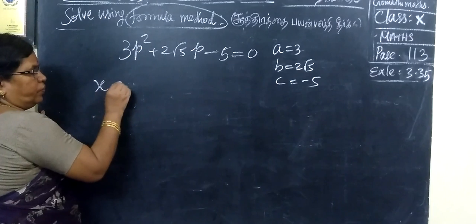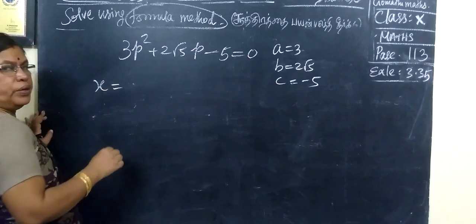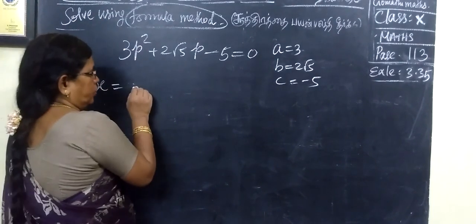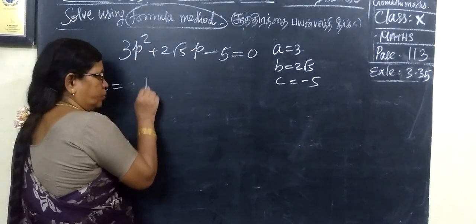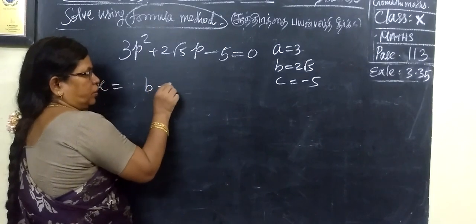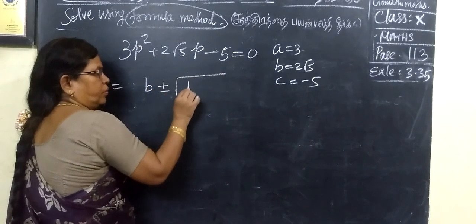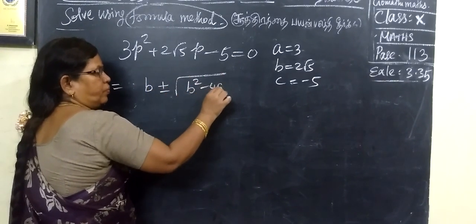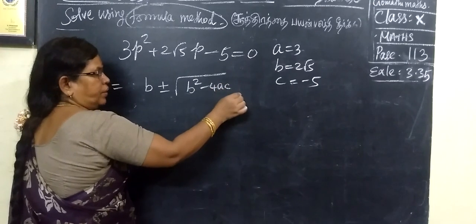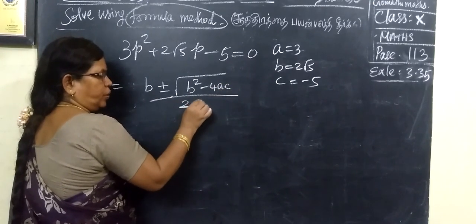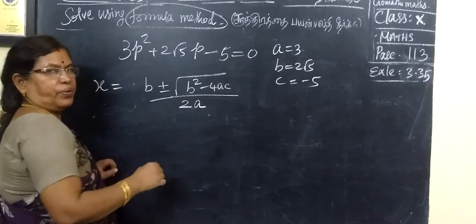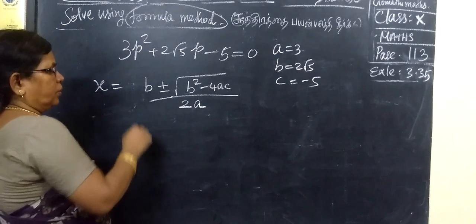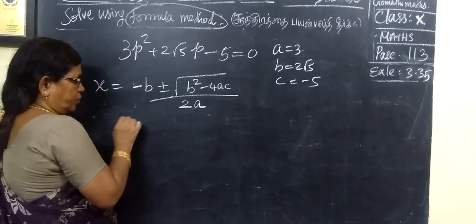The formula is x equal to: minus b, plus or minus root of b squared minus 4ac, all over 2a.